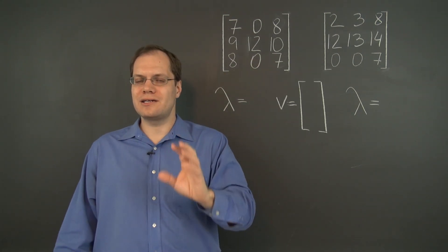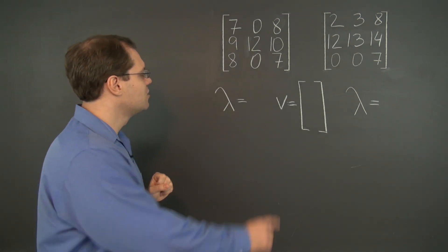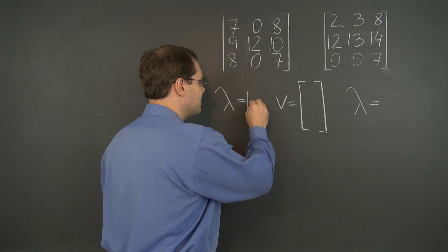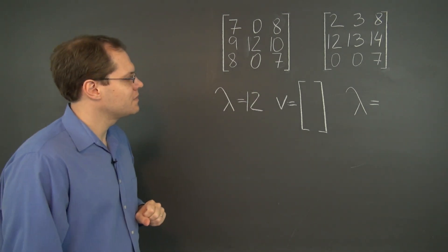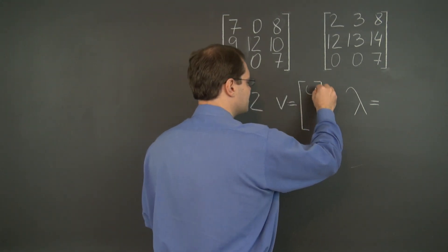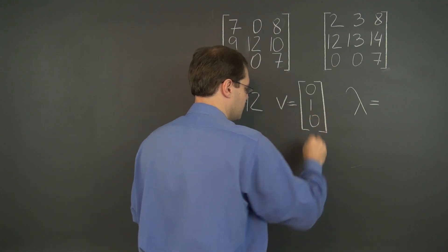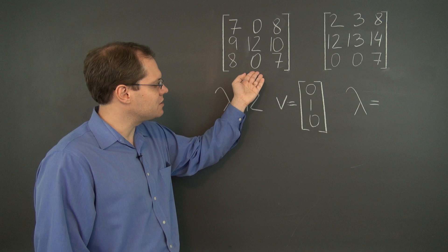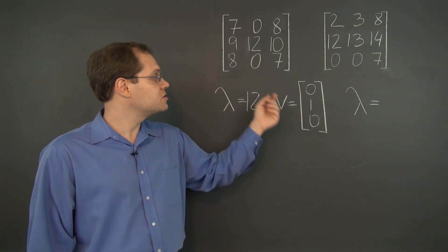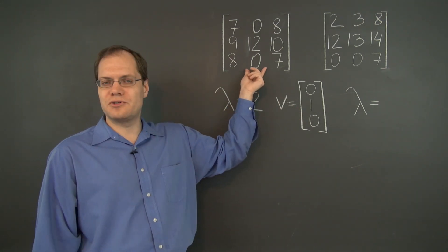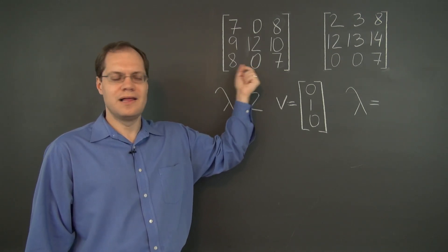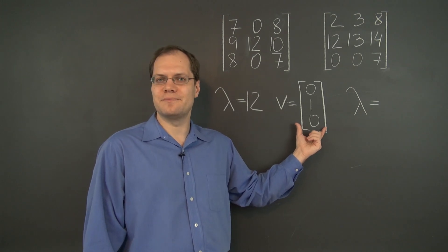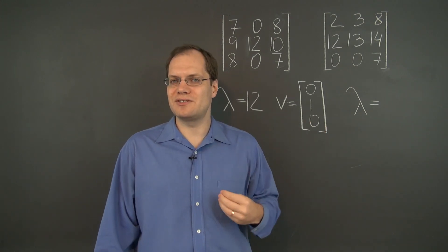So I'll clarify that with an example. If we just look at this matrix, it will have 12 as an eigenvalue and the corresponding eigenvector is [0, 1, 0]. This is easy to see because if you multiply this matrix by this vector, the result will be the second column of the matrix, which is [0, 12, 0]. And lo and behold, it's a multiple of the incoming vector—it's the incoming vector times 12.